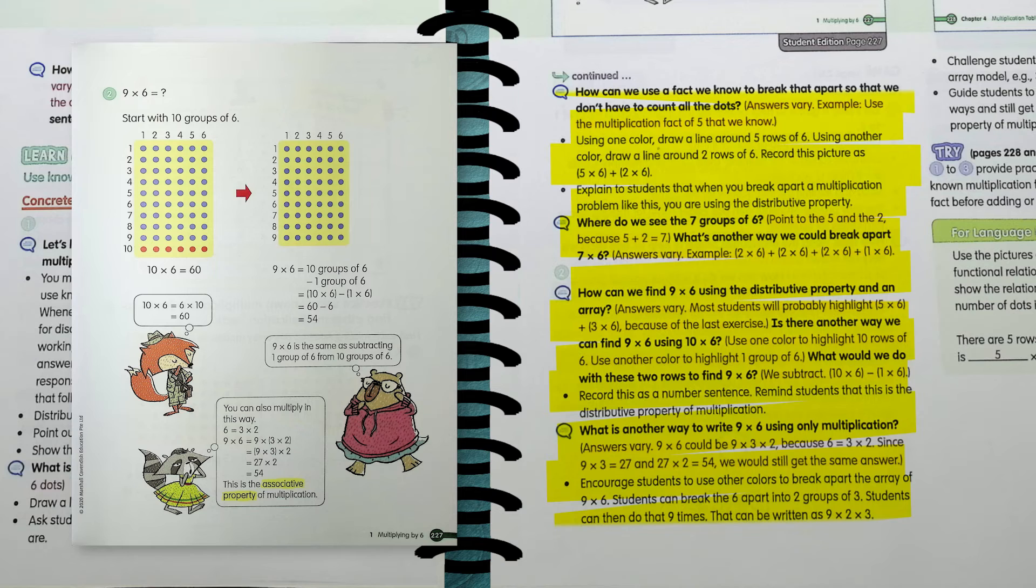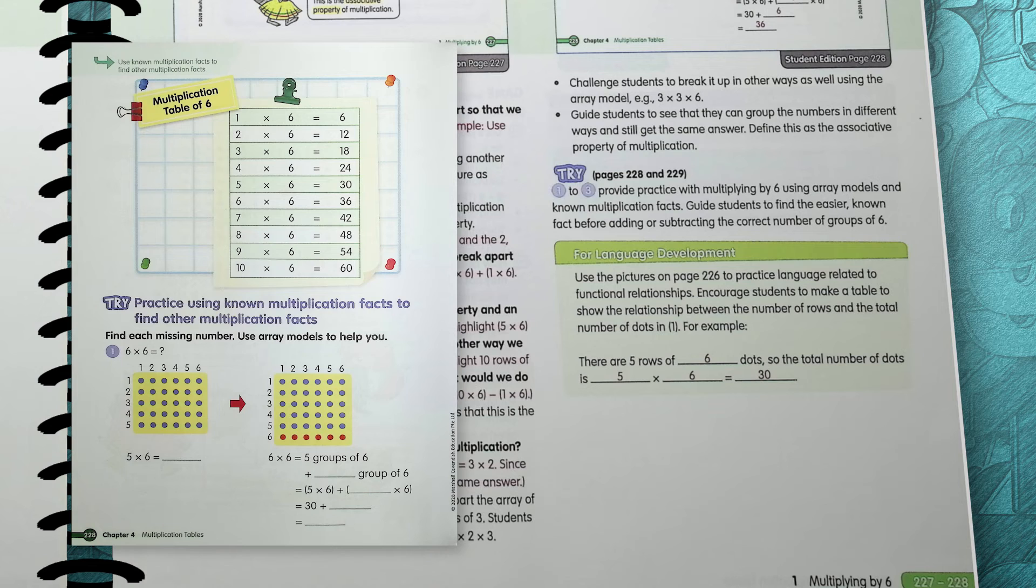At this time, you can introduce any new vocabulary on the page, including the associative property, and show how it is used to explain the steps they took to find the product.